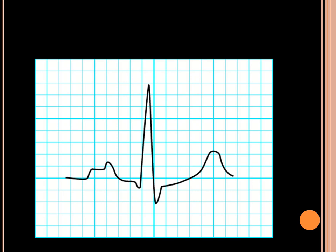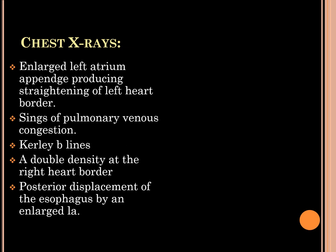Chest X-ray will show enlarged left atrium, straightening of the left border, signs of pulmonary venous congestion, features of left ventricular failure, and double density of the right cardiac border.